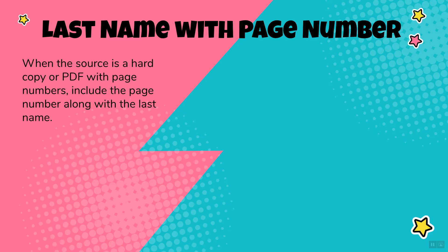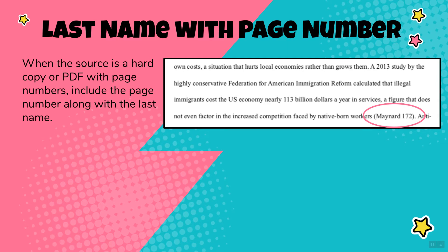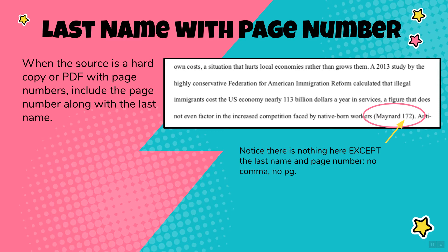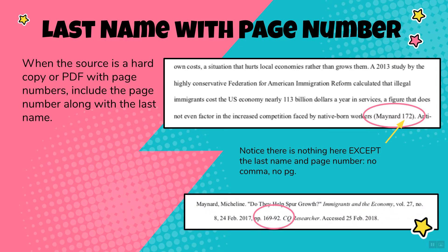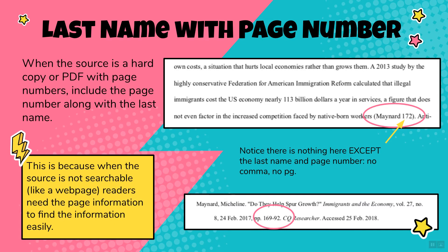When the source is a hardcopy or PDF that has page numbers, you should include the page number along with the writer's last name. Notice there is nothing here except the last name and page number — no comma, no 'pg.' Keep it clean. The Works Cited entry indicates the source is a PDF because page numbers are included there. Including page numbers helps readers locate that specific information quickly and easily.